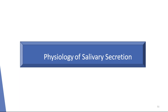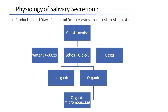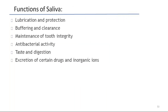Coming to physiology of salivary secretion: about 1 liter per day of saliva is secreted, that is 0.14 ml per minute, varying from rest to stimulation. Constituents: 94 to 99.5 percent is water, 0.5 to 6 percent is solids, remaining is gaseous. From solids there will be inorganic and organic components. Functions of saliva: lubrication and protection, buffering and clearance, maintenance of tooth integrity, antibacterial activity, taste, digestion, and excretion of certain drugs and inorganic ions.